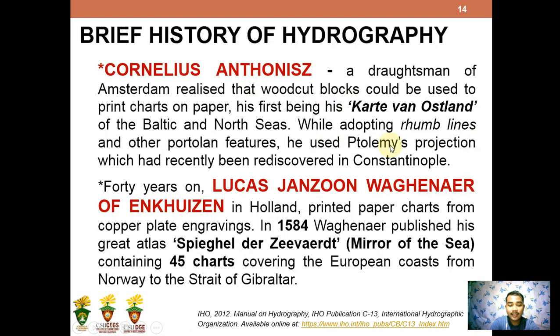Forty years later, Lukas Jansson Wagenaer of Enkhuizen in Holland printed paper charts from copper plate engravings. In 1584, Wagenaer published his great atlas 'Spieghel der Zeevaerdt,' or 'The Mirror of the Sea,' which contains 45 charts covering the European coast from Norway to the Strait of Gibraltar. From the idea of Cornelius — that woodcut block charts could be printed on paper — Wagenaer advanced the work and published this influential atlas.